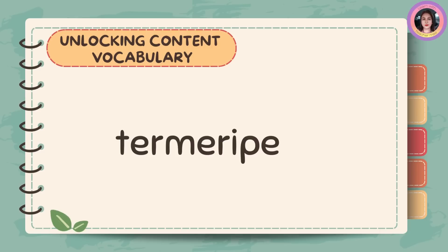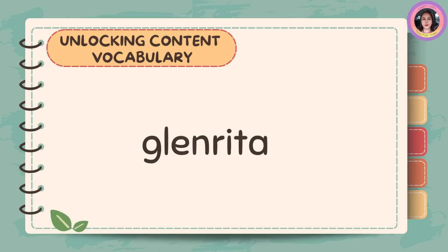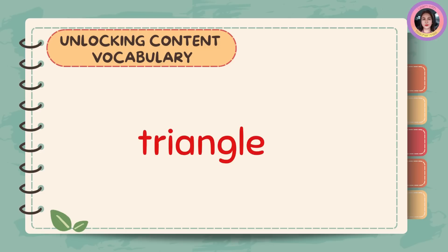Now, what word can you form from these jumbled letters? The first word is the total distance around the edge of a two-dimensional shape. Very good! It is a perimeter. The second word is a figure with three edges and three vertices. It is one of the basic shapes in geometry. Very good! It is a triangle.